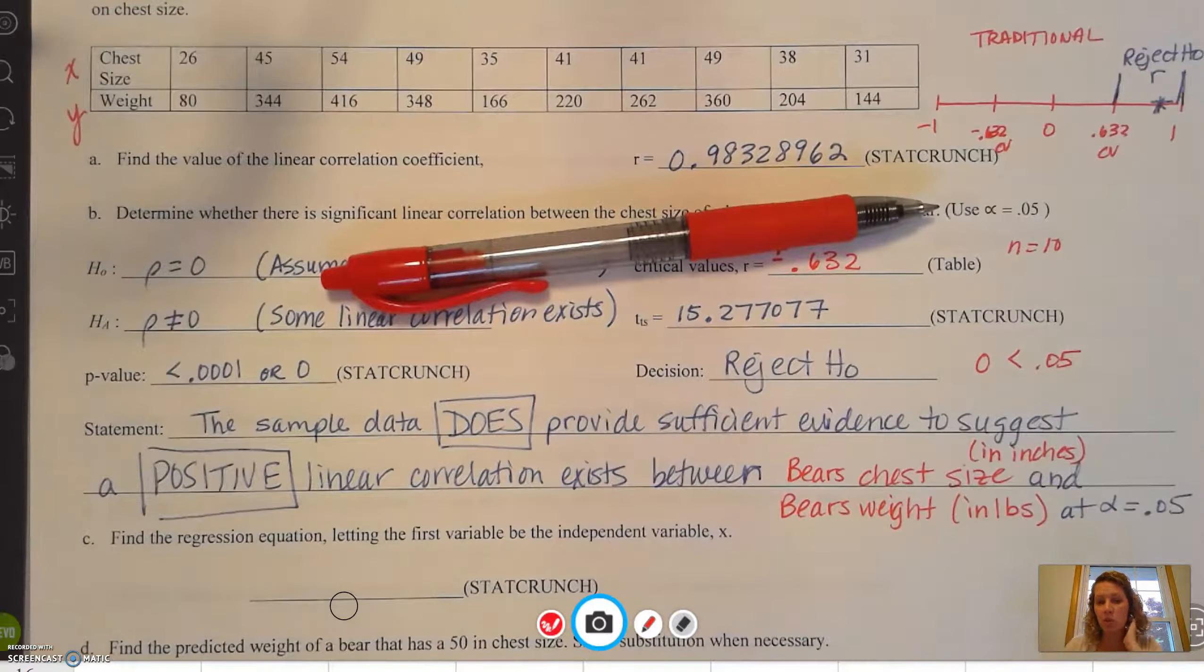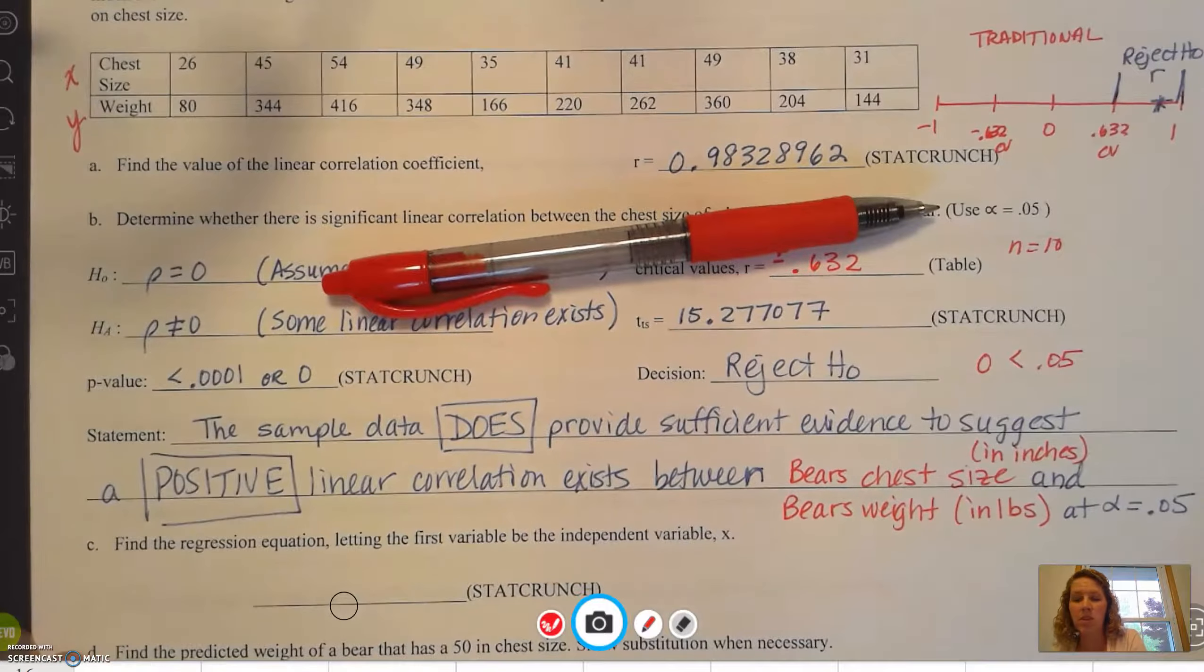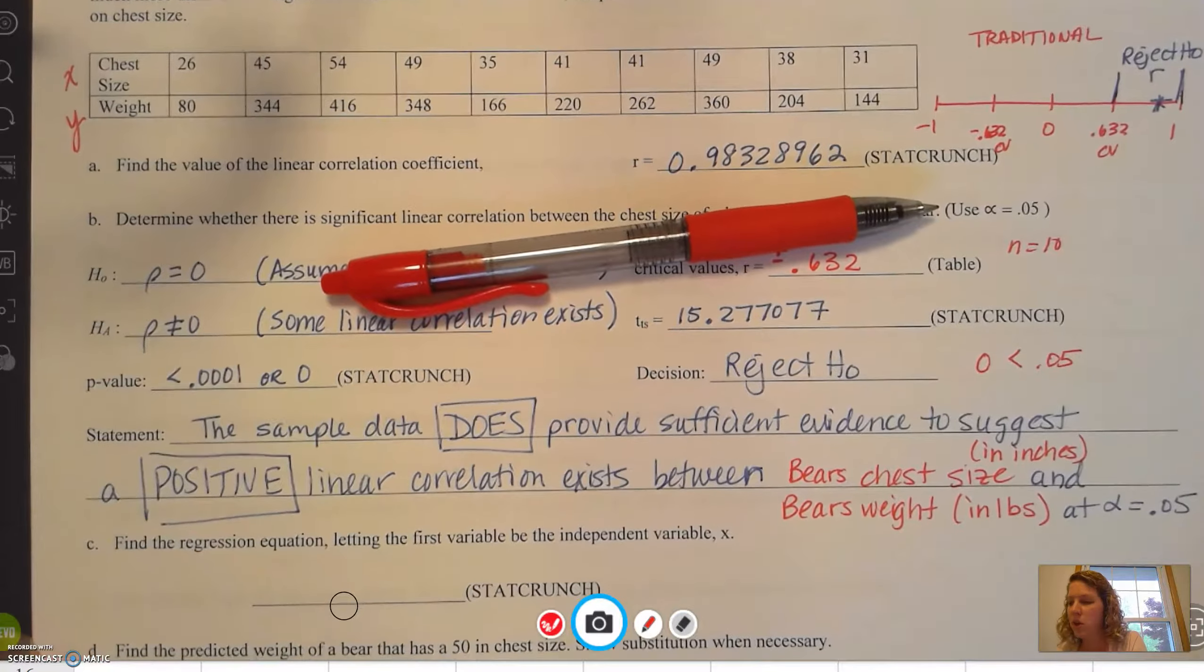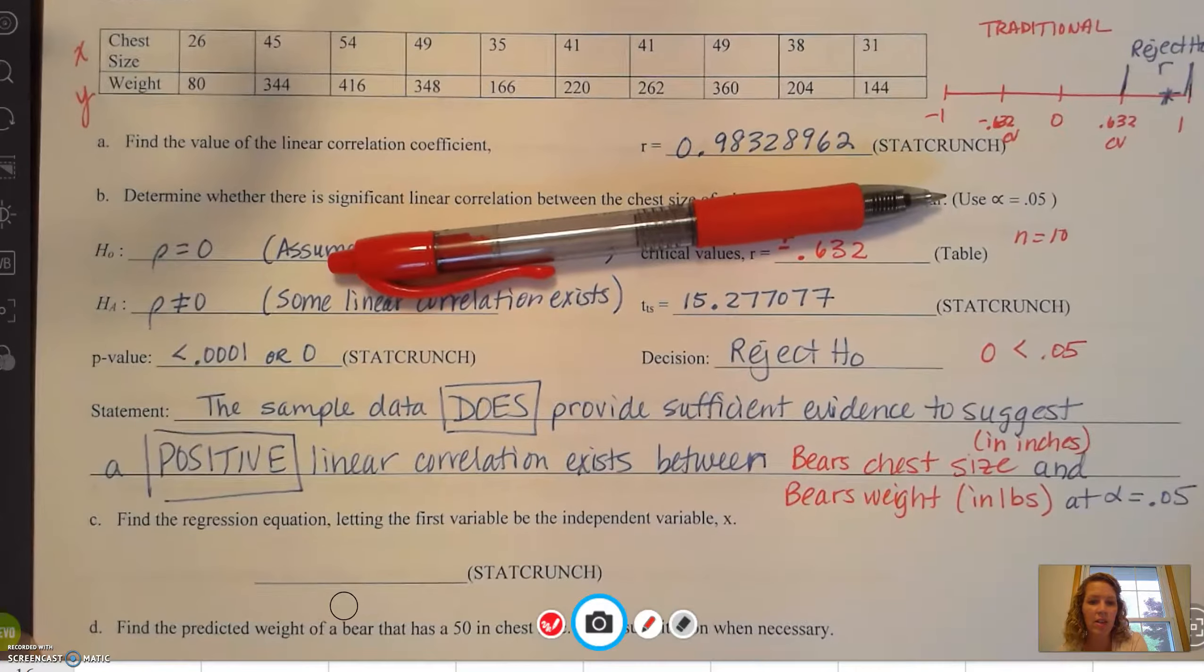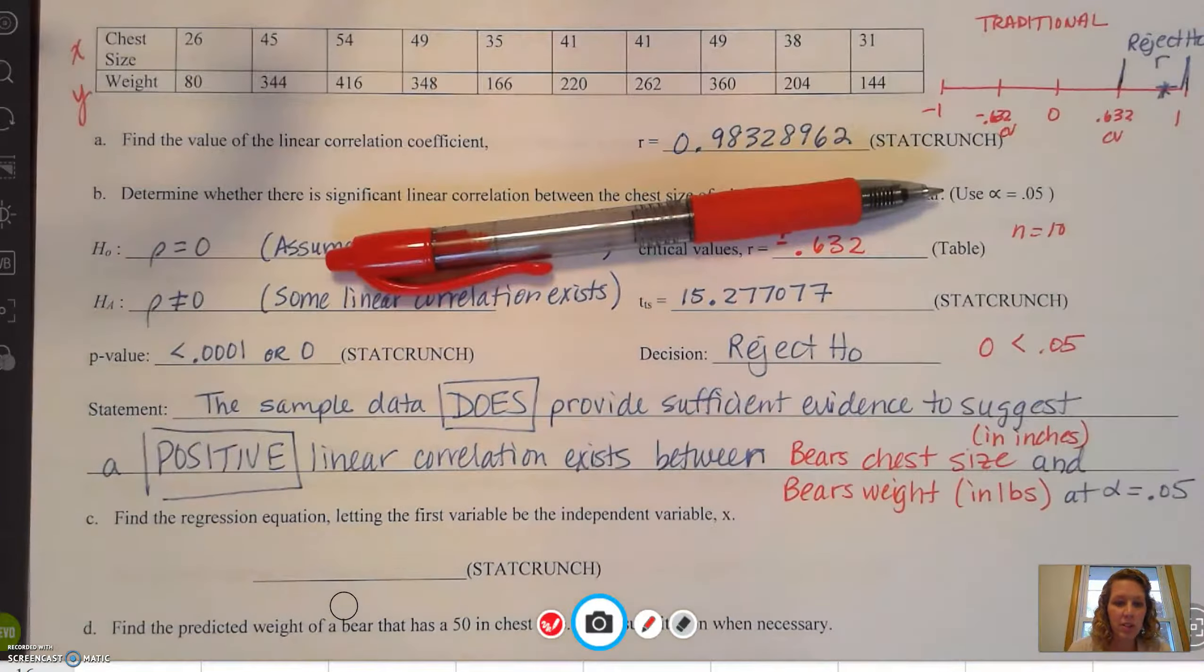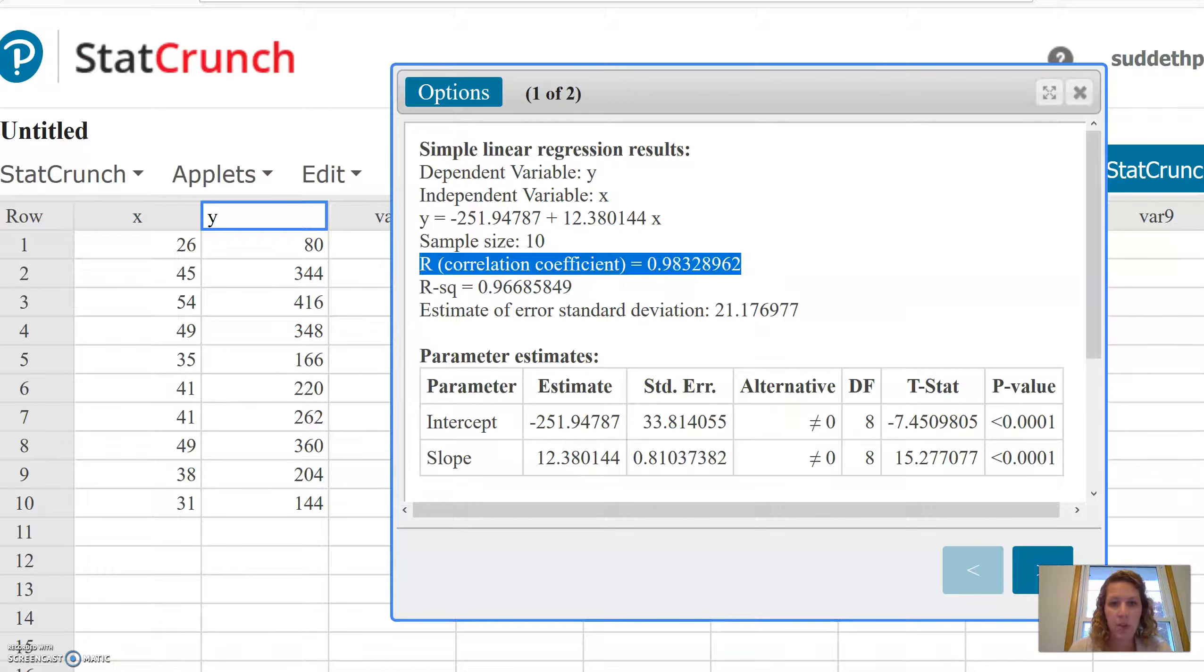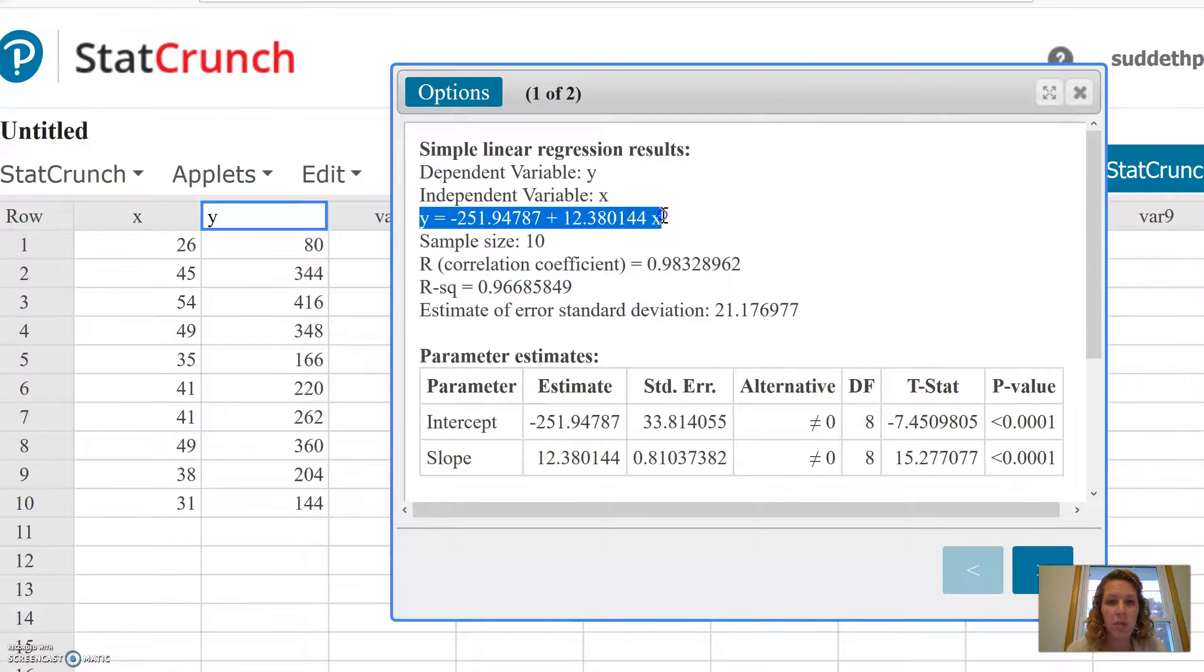We're getting closer to being done. Now we have to find the regression equation. Back to StatCrunch. Our regression equation is right here with the y equals. Remember, I'm not going to use y, I'm going to use y-hat. So it's going to be ŷ = -251.94787 + 12.380144x.